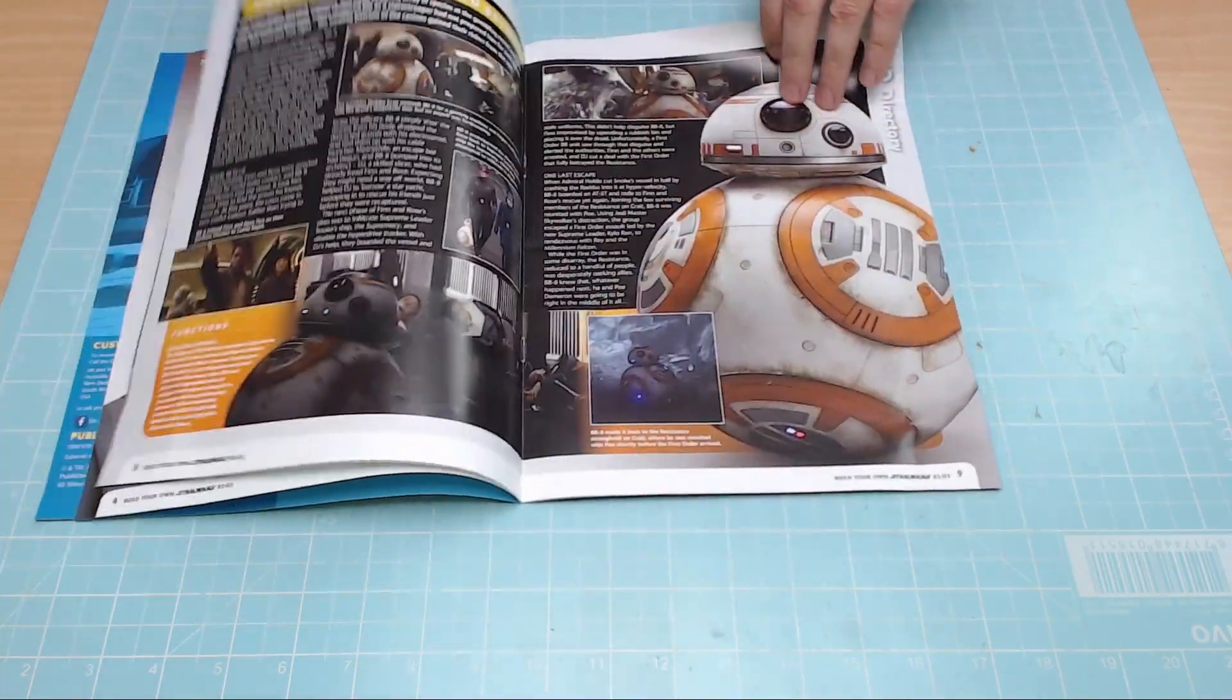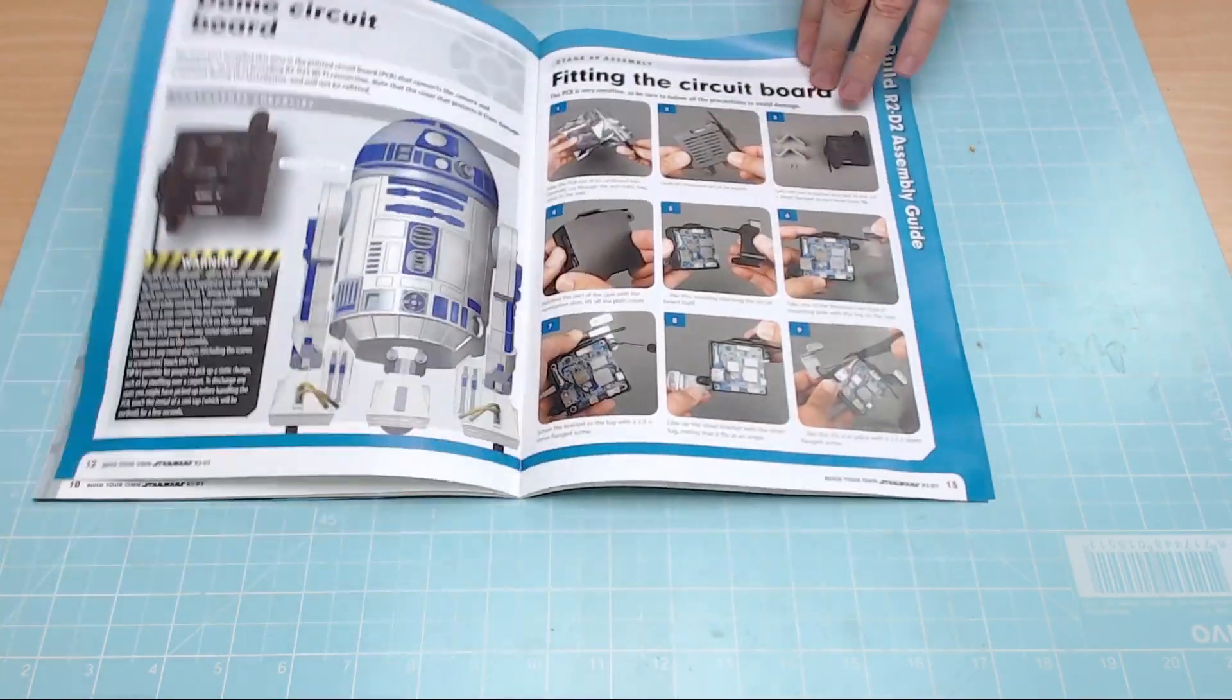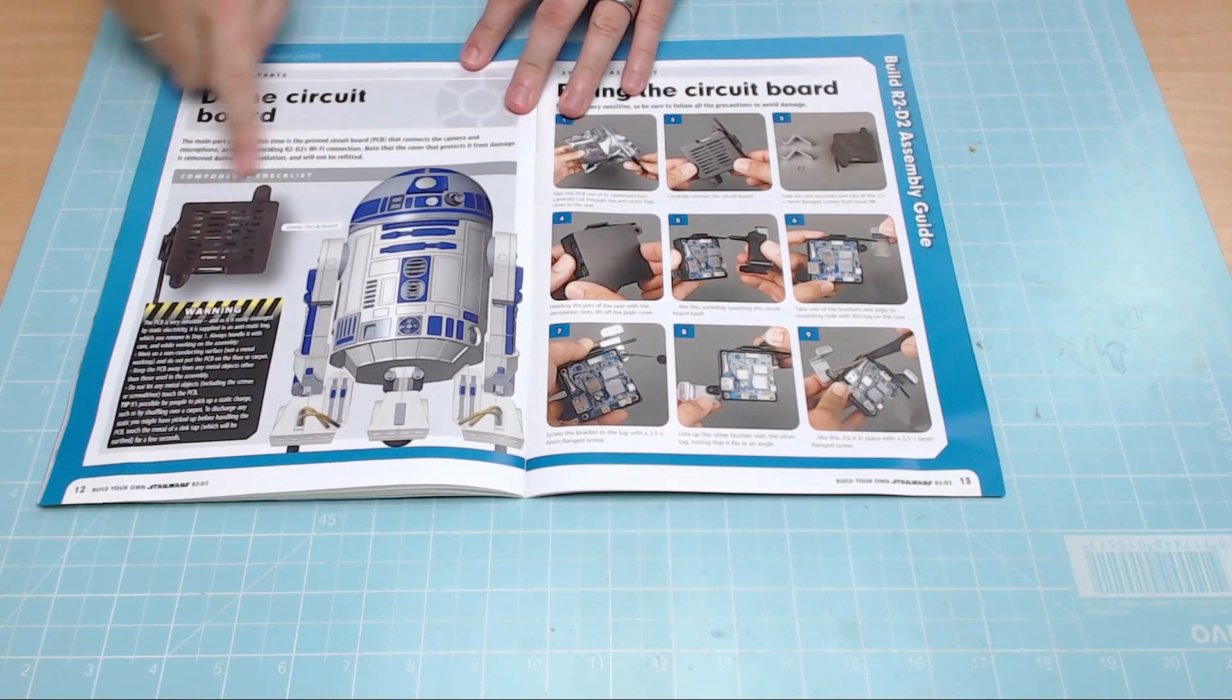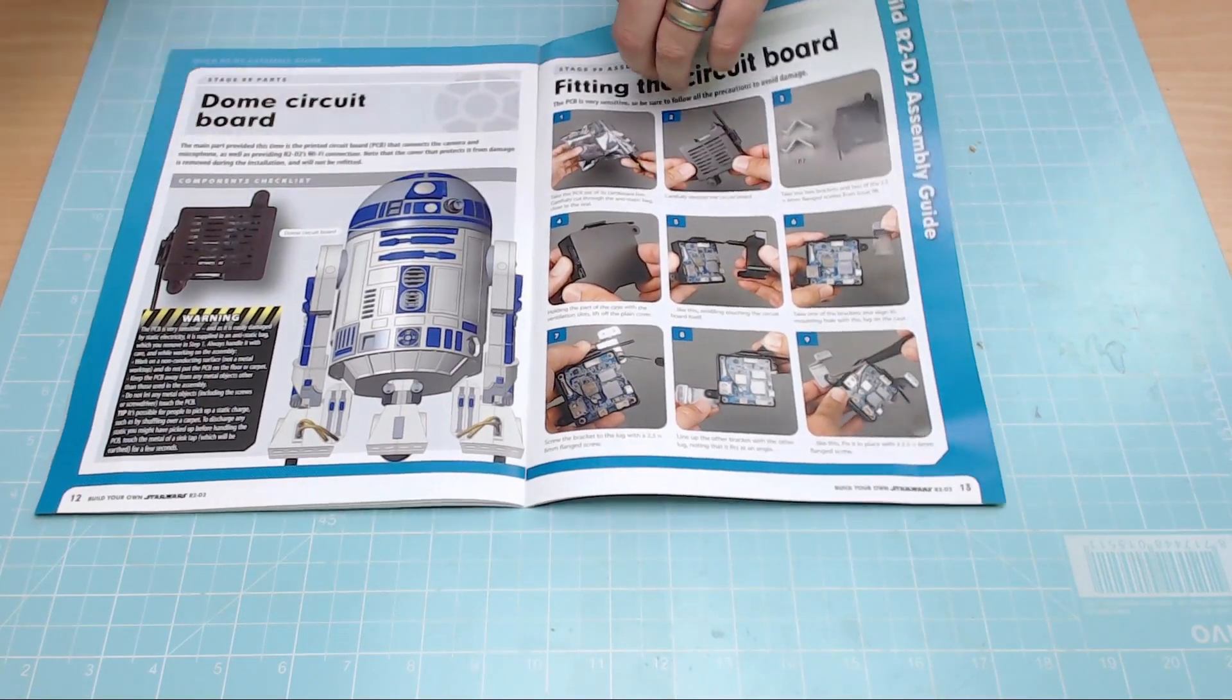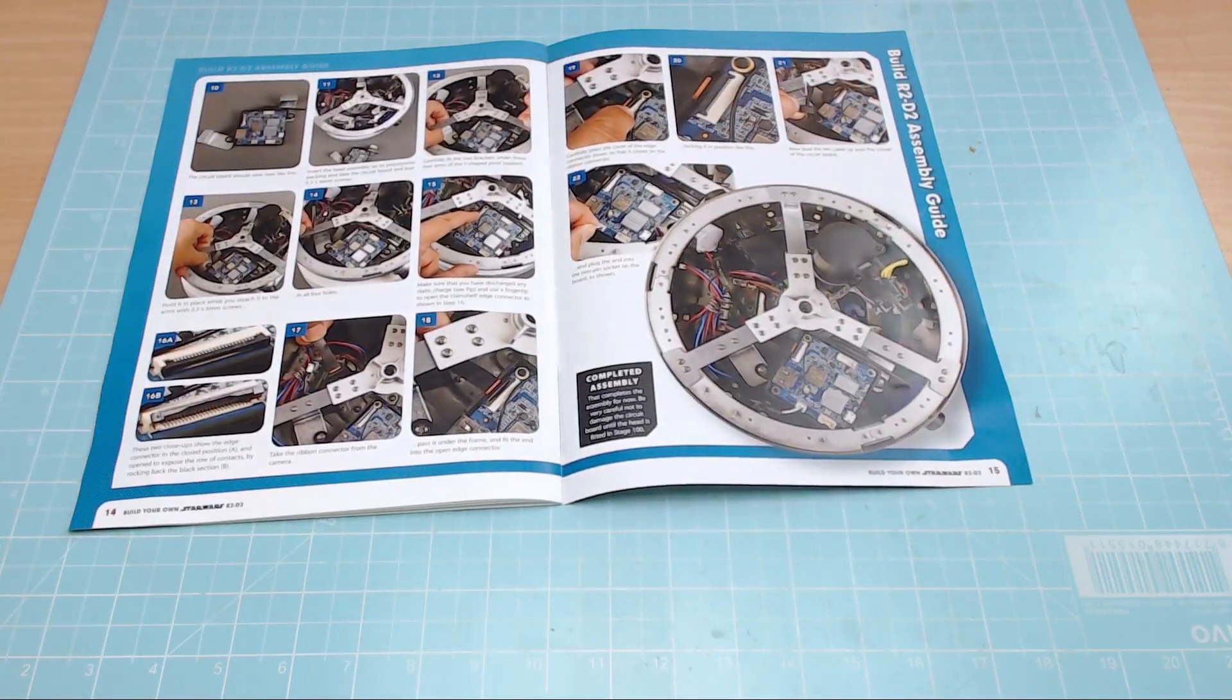Let's just see what we've got to do. Not a lot in this issue, to be honest with you. All we've got to do is put this little PCB board in, attach it to the dome there, which is why, as you can see, R2 hasn't got a head over there.